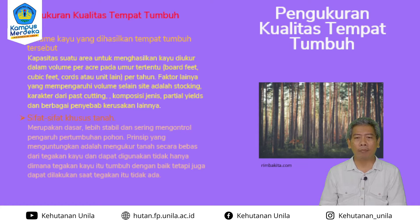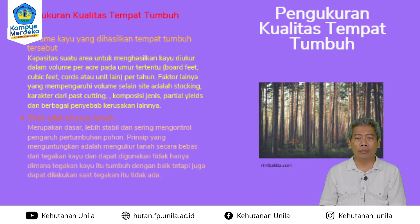Pengukuran juga bisa dilakukan dari sifat-sifat khusus tanah, yang merupakan dasar lebih stabil dan sering digunakan untuk mengontrol pengaruh pertumbuhan pohon. Prinsipnya adalah mengukur tanah secara bebas — bisa pH-nya, bisa kandungan unsur haranya — dan dapat digunakan tidak hanya saat tegakan kayu tumbuh dengan baik, tetapi juga pada saat tegakan itu tidak ada, misalnya habis ditebang. Yang diukur meliputi tebal dan tekstur horizon A, horizon B, horizon C, sifat batuan dalam tanah, serta kemiringan lahan.